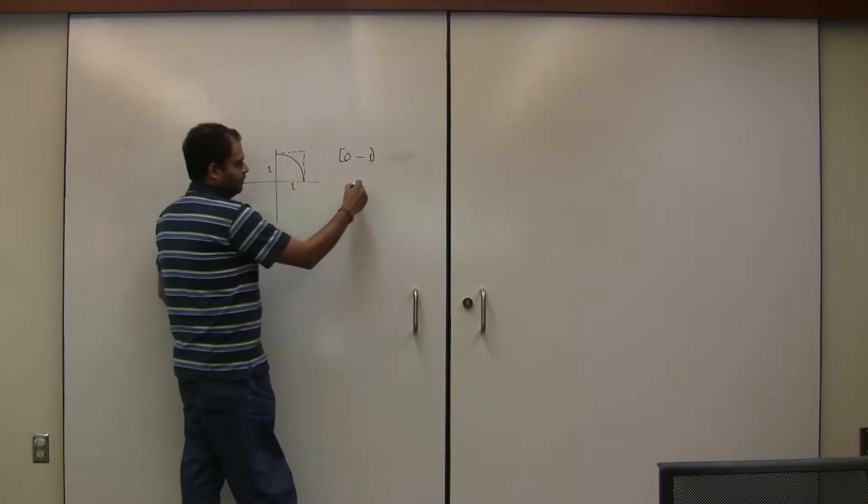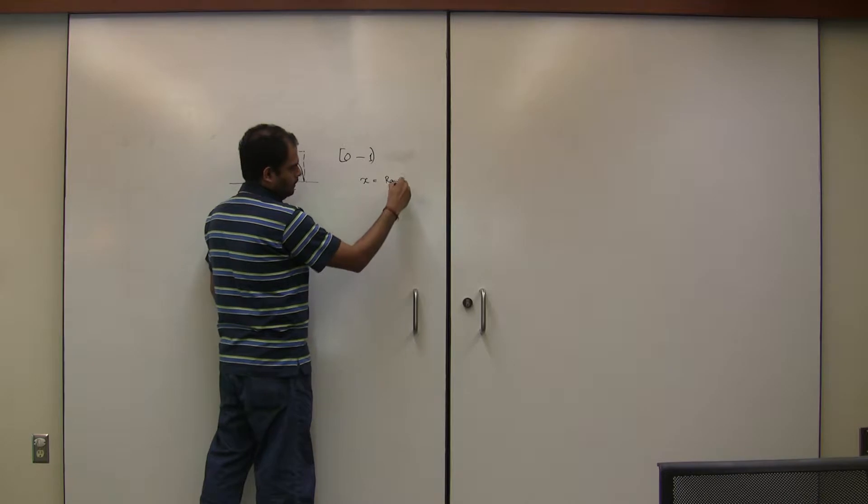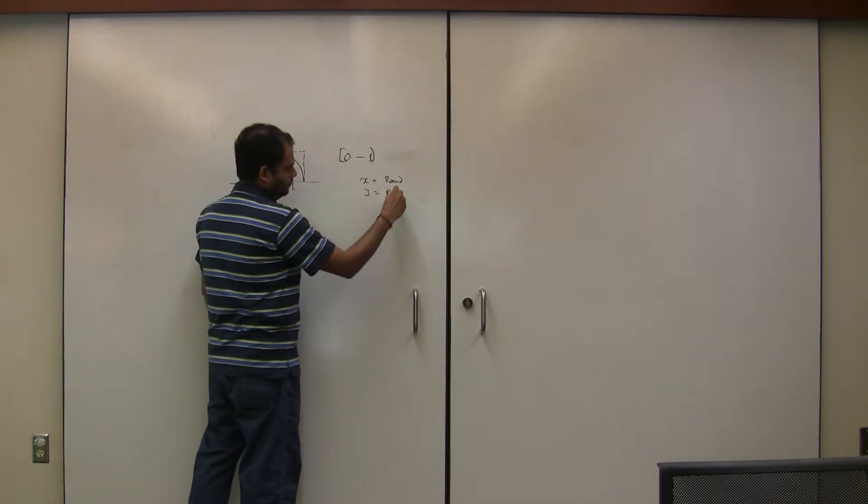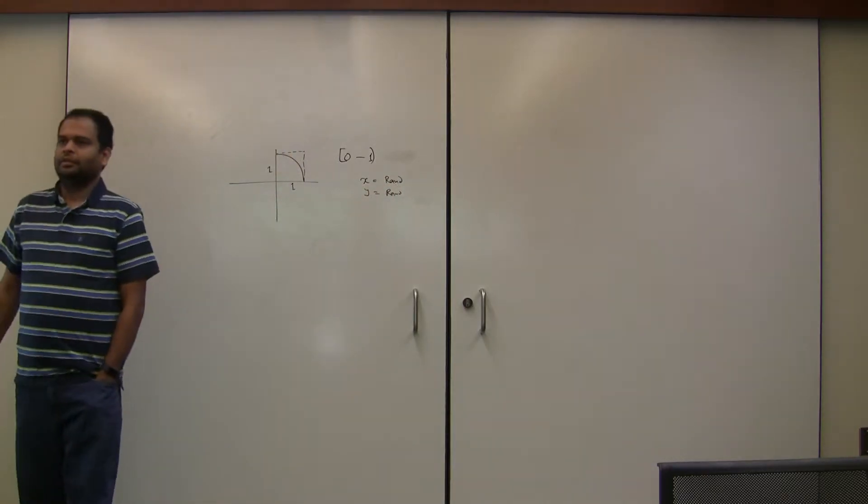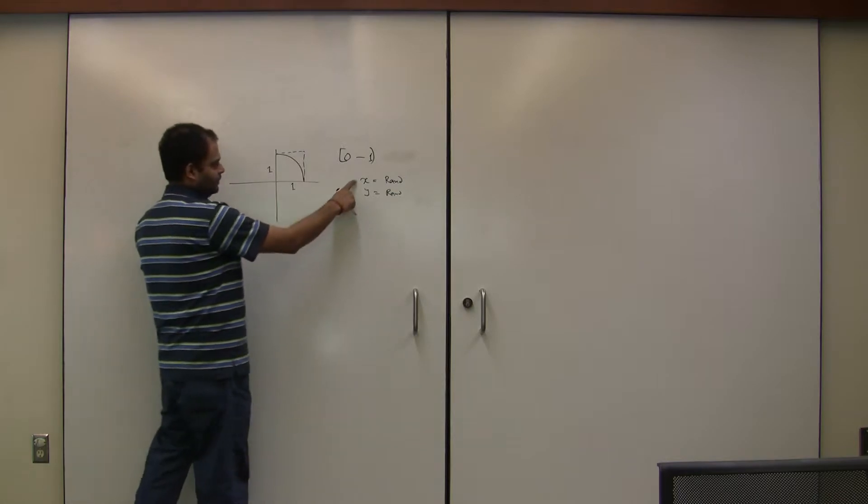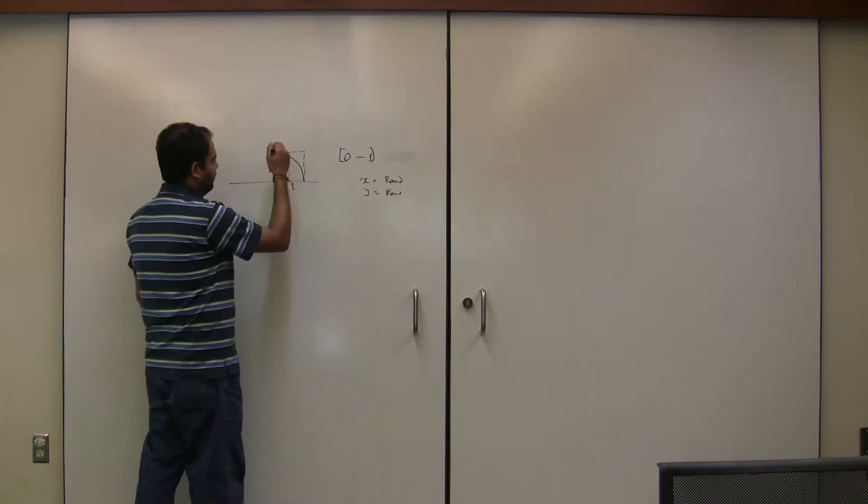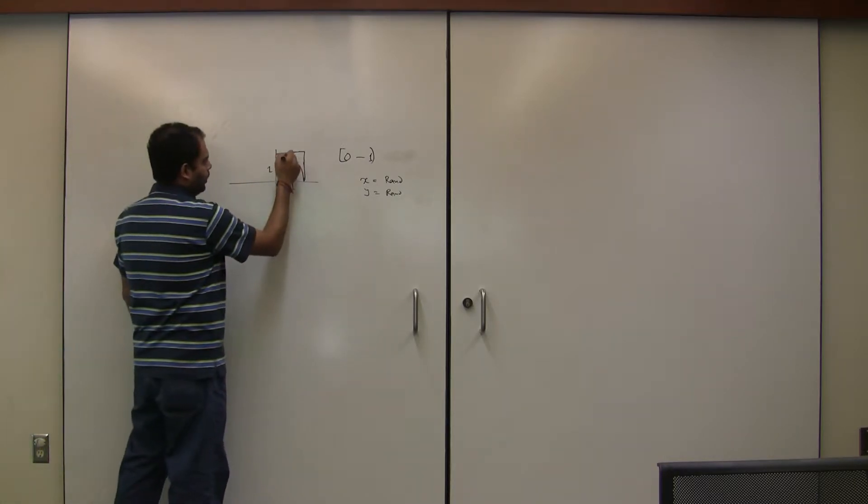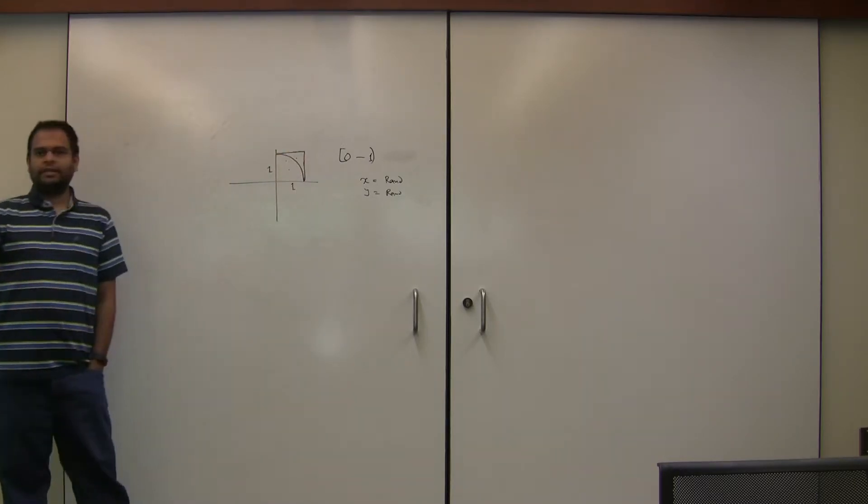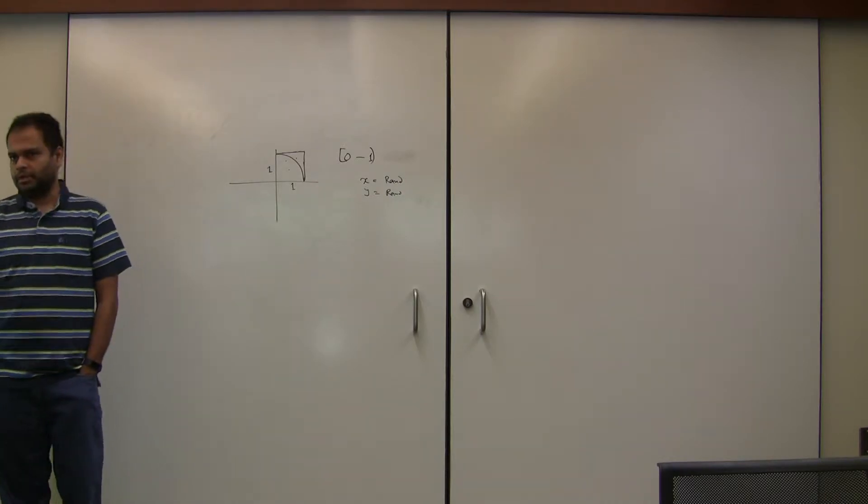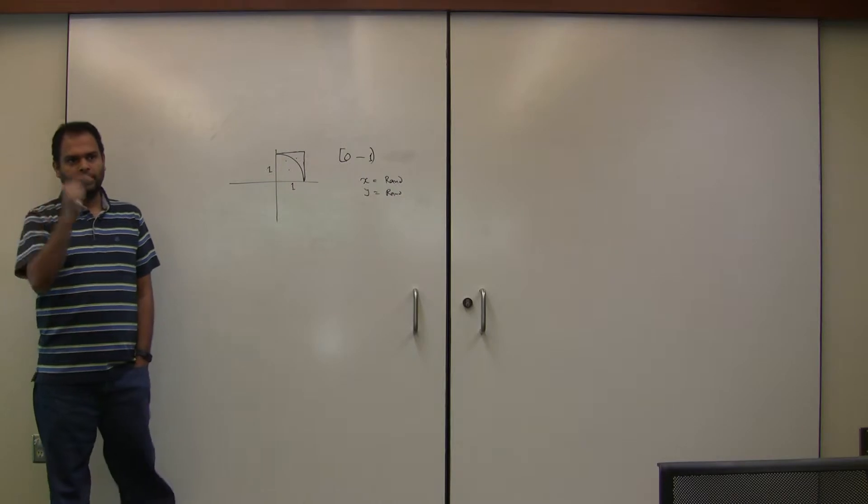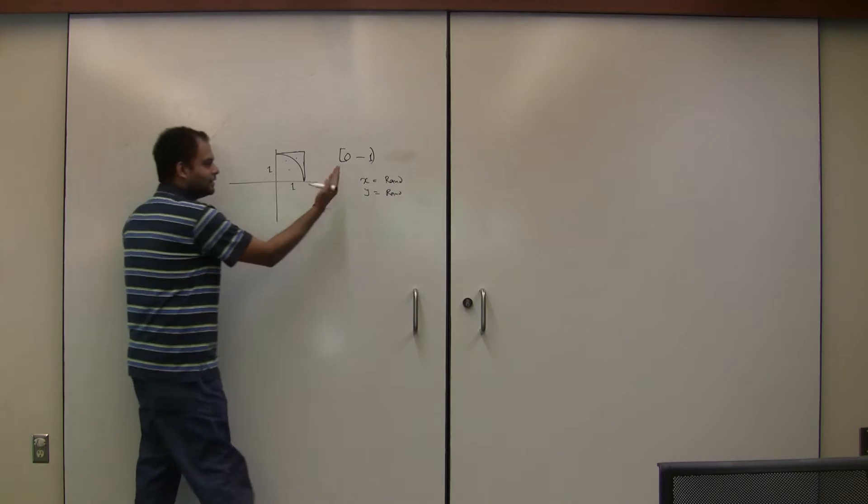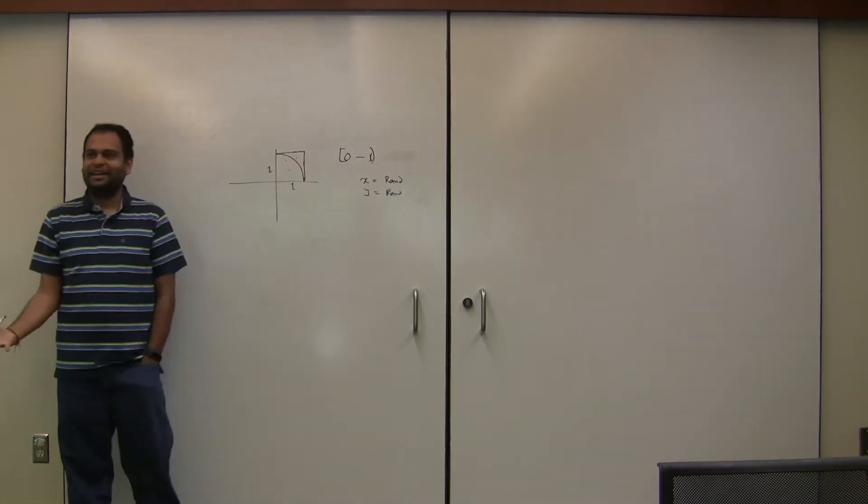Now, if I generate a random number x equals random, and y equals random. What do you think is the probability of x and y being in this square? If I plot that point anywhere, wherever the x random number says, wherever the y random number says. If I plot that point, what do you think is the probability of it being inside the square? 100 percent, because this is between ranges of 0 and 1, it's got to be in the square.